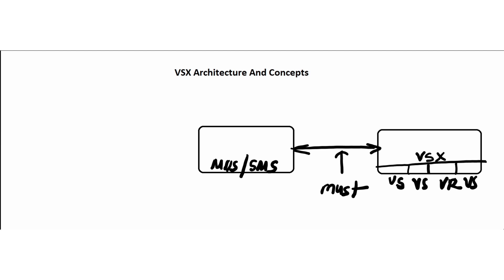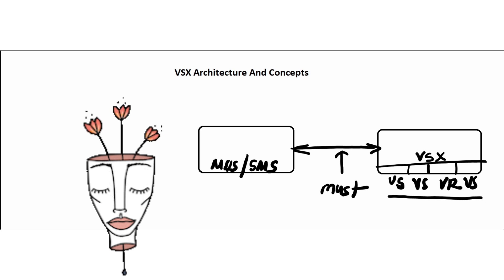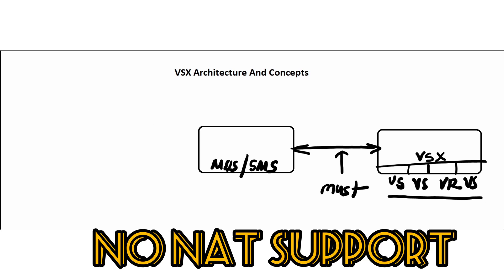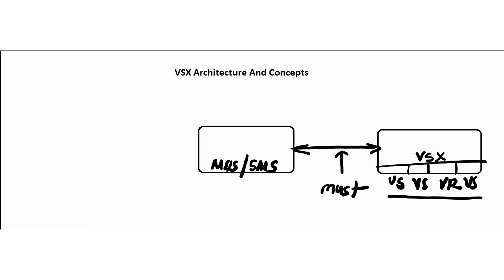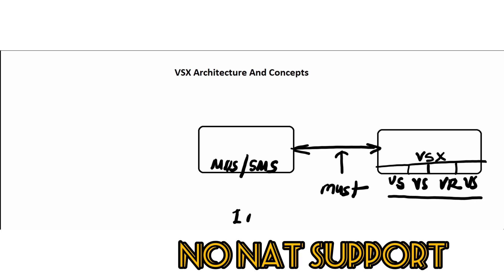The virtual devices, for now consider them as virtual systems, require configuration to be deployed and to work. An important point about connectivity between the VSX gateway and the management server: there is no support to manage a VSX gateway when the management server is behind NAT. So whenever you set up NAT for the VSX gateway or management server, you need to ensure that neither is placed behind NAT.